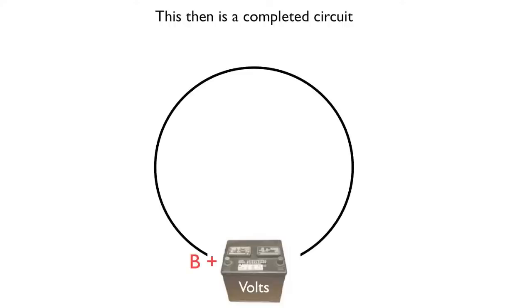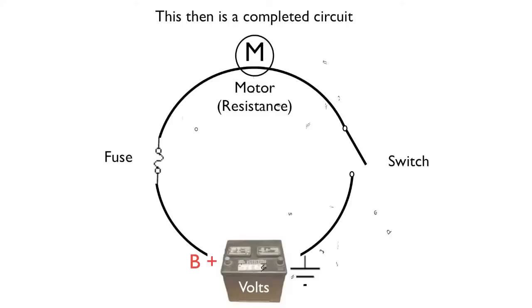Of course, you start with the battery and your circuit. There will be the power and the ground. There will be some type of fuse, a resistance like a motor, and a switch. Now, when that switch is closed, the circuit is then complete.